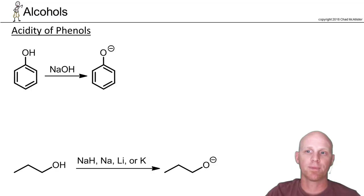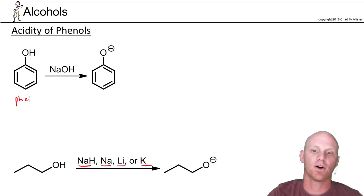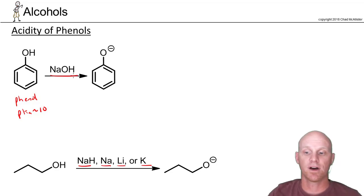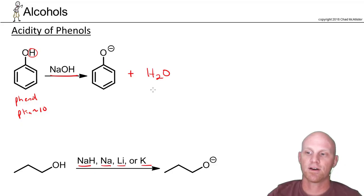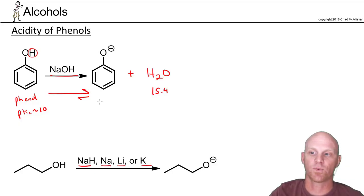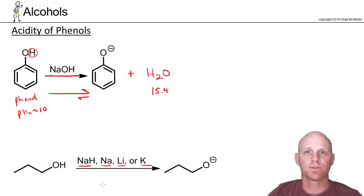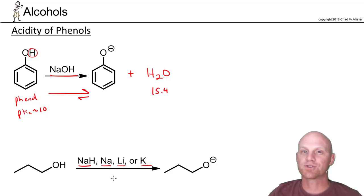One last point about alcohol acidity: for a regular aliphatic alcohol, NaOH is not strong enough — you need sodium hydride, sodium, lithium, or potassium. But for a phenol with a pKa of around 10, sodium hydroxide is definitely strong enough. Using NaH or an active metal would work but would be overkill when NaOH is far cheaper. In this case, hydroxide deprotonates the phenol forming water as the conjugate acid. The pKa of water is around 15.5, so the equilibrium lies heavily to the right toward the weaker acid, water. So for phenols, NaOH is sufficient, whereas for regular aliphatic alcohols, we need something stronger.